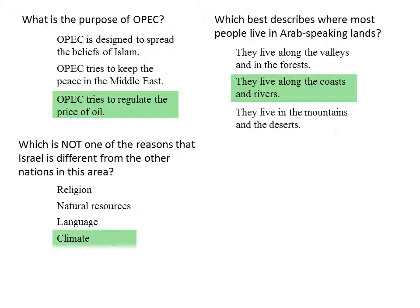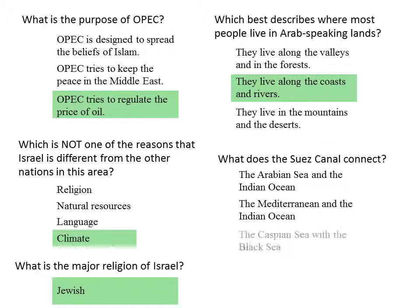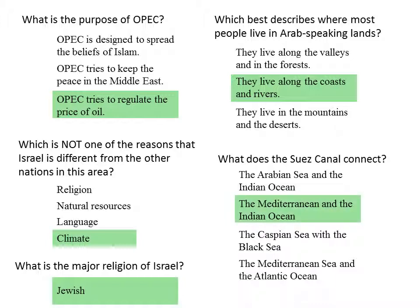Climate is about the same as the other nations in this area. And what is the major religion of Israel? Jewish. What does the Suez Canal connect? The Mediterranean and the Indian Ocean? The Caspian Sea and the Black Sea? Or the Mediterranean Sea and the Atlantic Ocean? It connects the Mediterranean with the Indian Ocean.